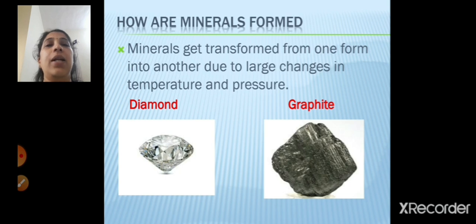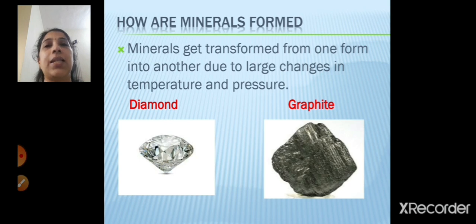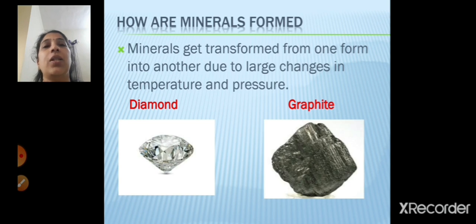Diamond and graphite are formed when minerals get transformed from one form into another due to large changes in temperature and pressure. There is always change in the temperature and pressure, and at that time these minerals are formed — they get transformed from one form to the other.